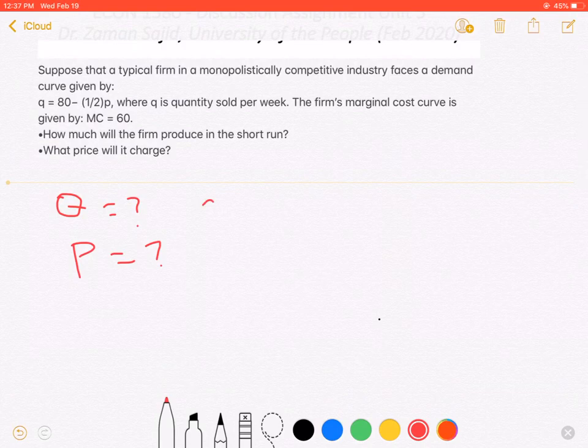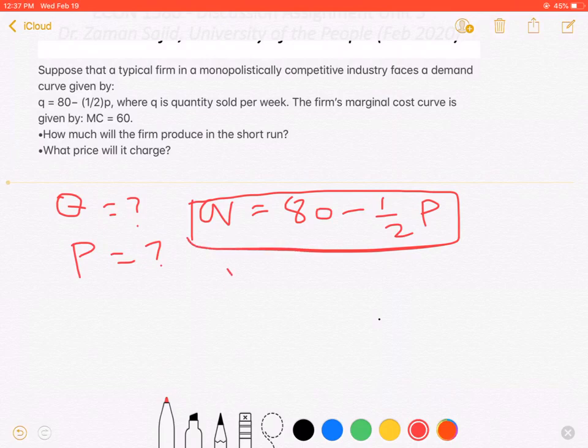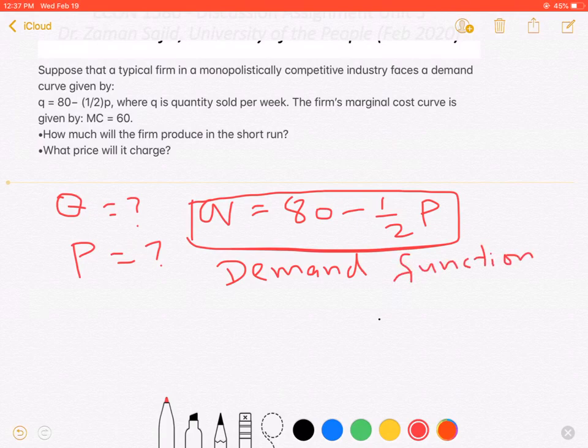Now the equation that you see here, Q = 80 - ½P, this equation is called the demand function. Now what is the demand function basically? It is a relationship between the price and the quantity demand. So it gives you the market demand at the given price. Other than this one we have some other relationships.